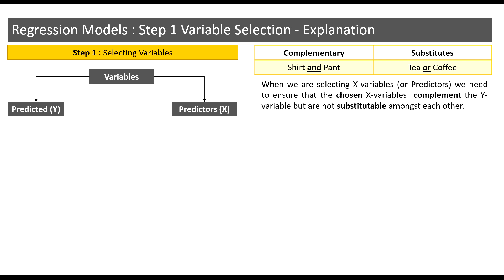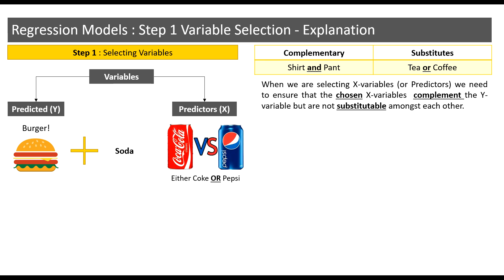Let us take an example to understand this further. I have a burger here. What do you think complements a burger? Well, a soda complements a burger, like we have Happy Meal at McDonald's. In soda we have multiple options — for instance, Coke and Pepsi. Both Coke and Pepsi complement a burger, but we only choose one. It does not make sense to buy both, so we either buy Coke or Pepsi when buying a burger.